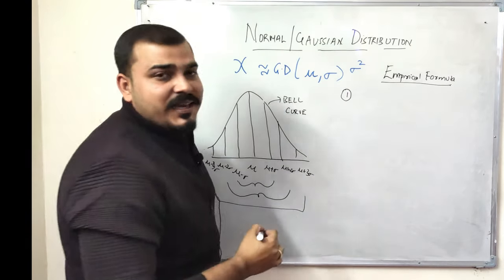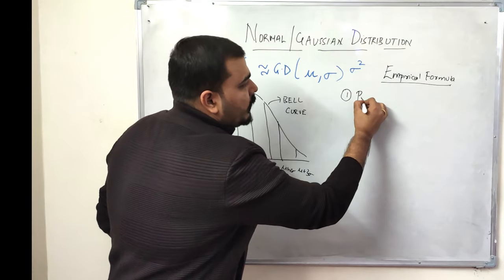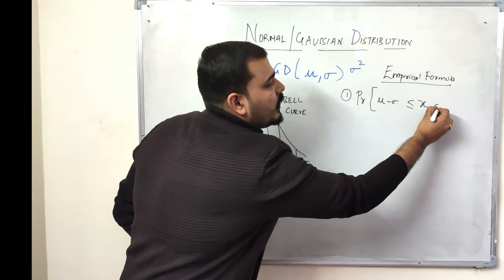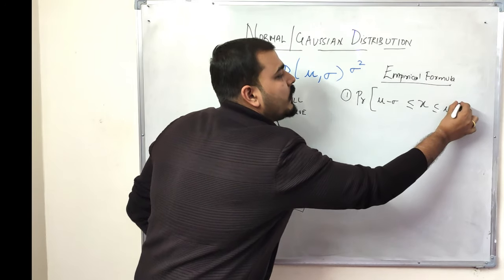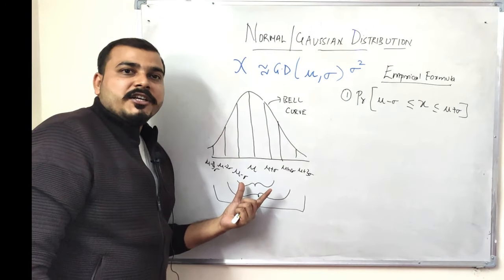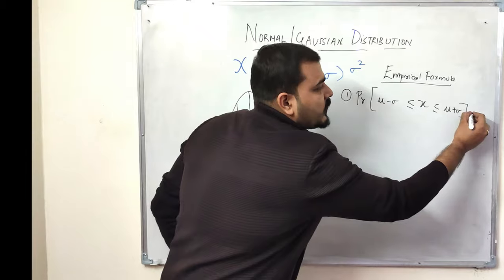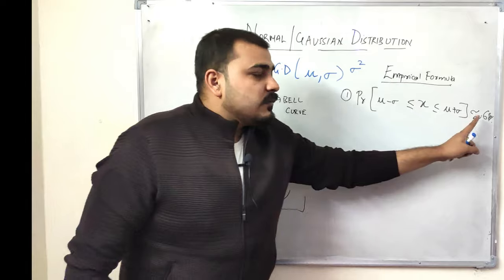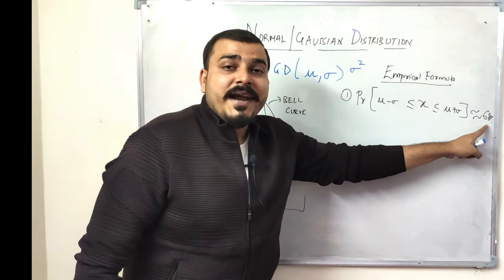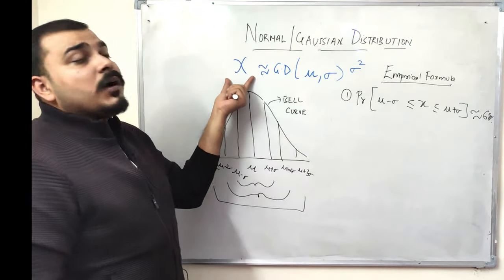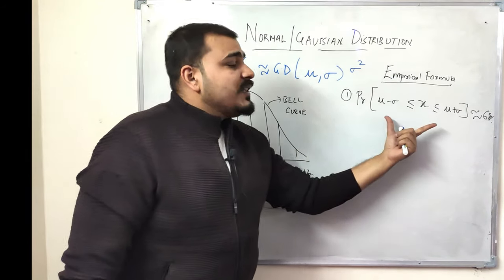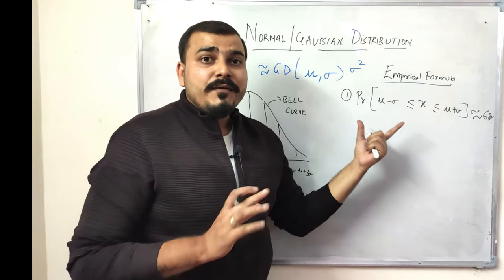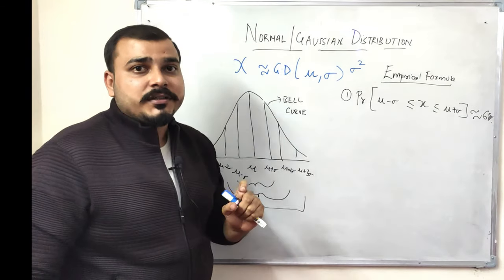The first formula says that the probability of a variable that falls within the range of mu minus sigma and mu plus sigma, which is the range of first standard deviation, will approximately be equal to 68 percent. This means 68 percent of the data points belonging to the random variable X fall within the range of first standard deviation. And why are we saying that? Because this random variable belongs to a Gaussian distribution.